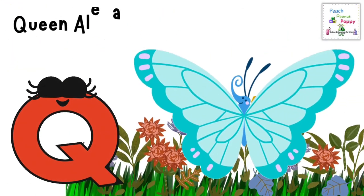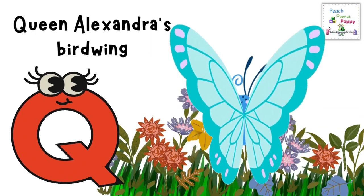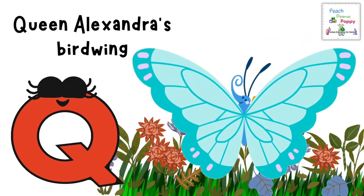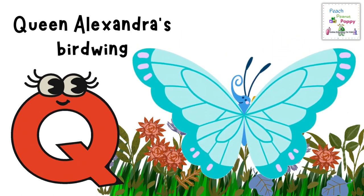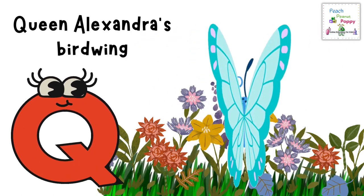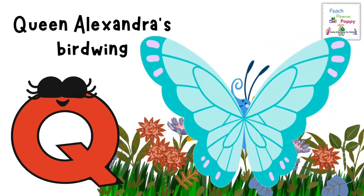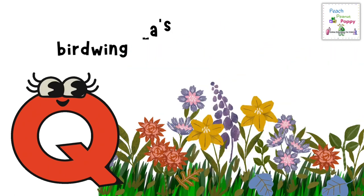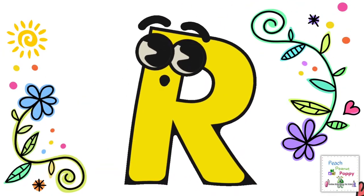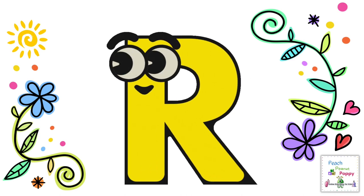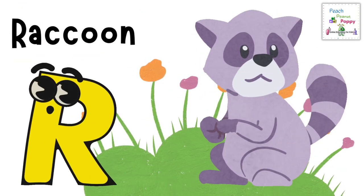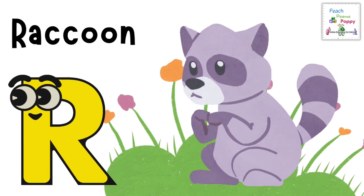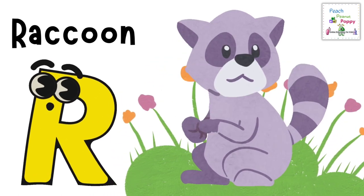Q. Q for Queen Alexandra's Birdwing. Q-U-E-E-N-A-L-E-X-A-N-D-R-A-S-B-I-R-D-W-I-N-G. Queen Alexandra's Birdwing. R. R for Raccoon. R-A-C-C-O-O-N. Raccoon.